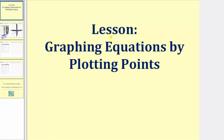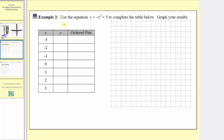Welcome to part two of the lesson on graphing equations by plotting points. Example two: we're asked to use the equation y equals the opposite of the square of x plus five to complete the table below and then graph the results.